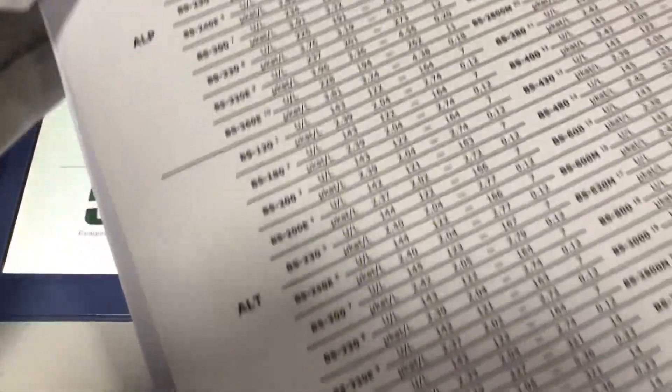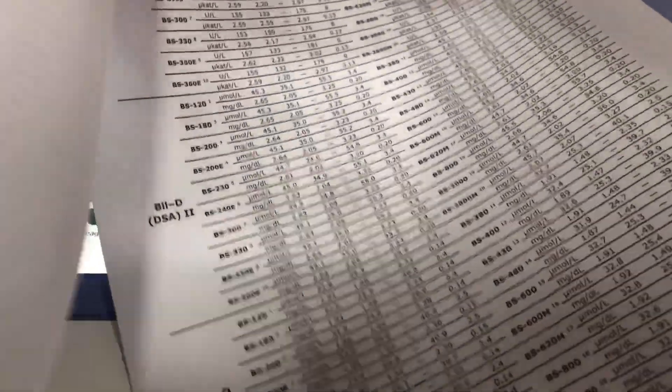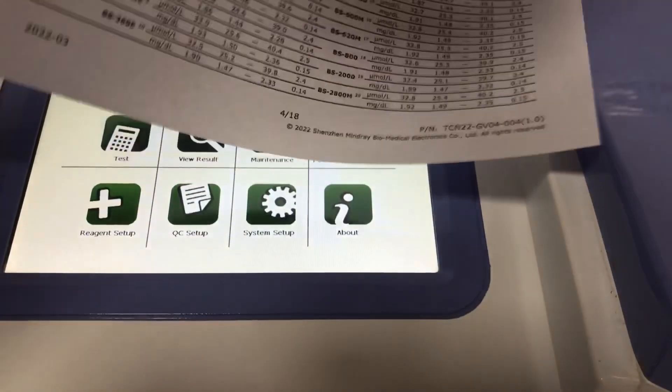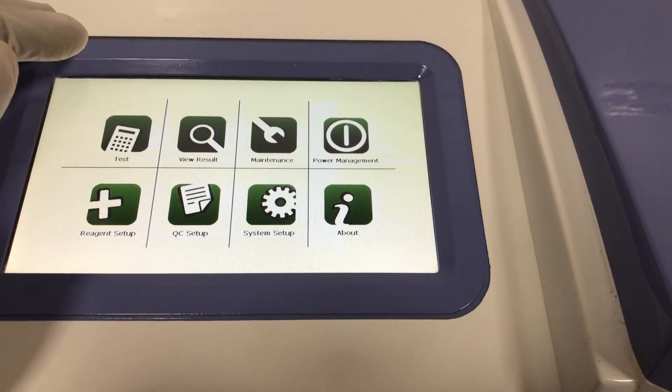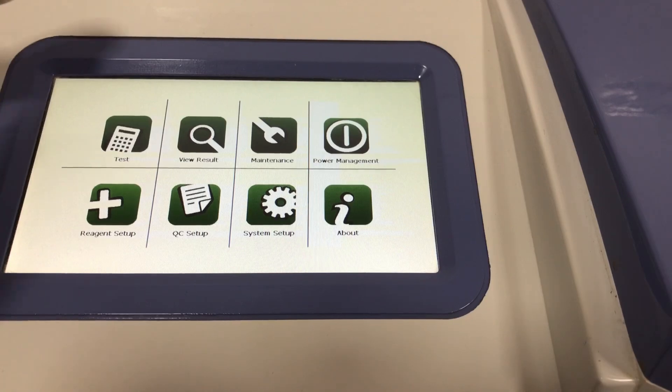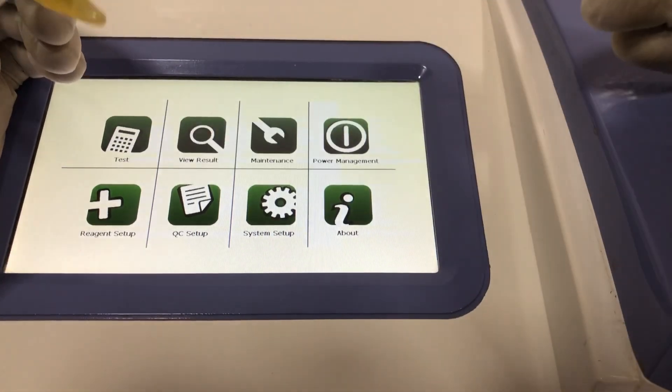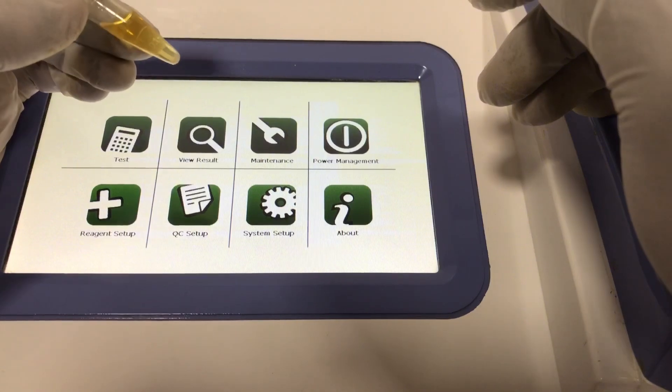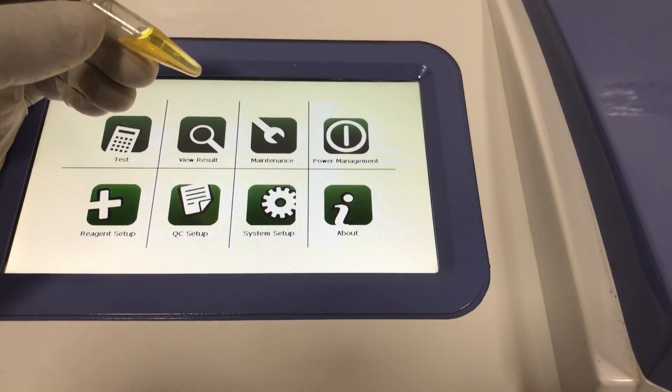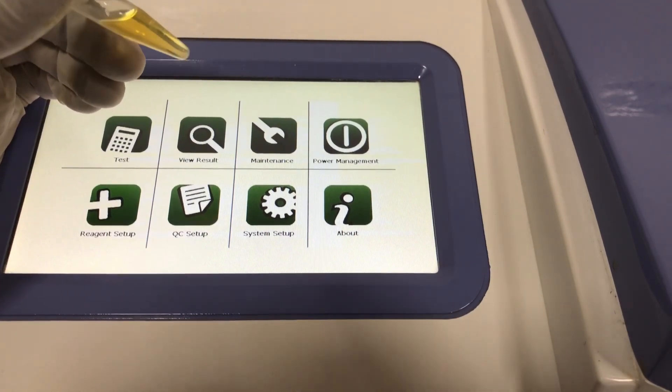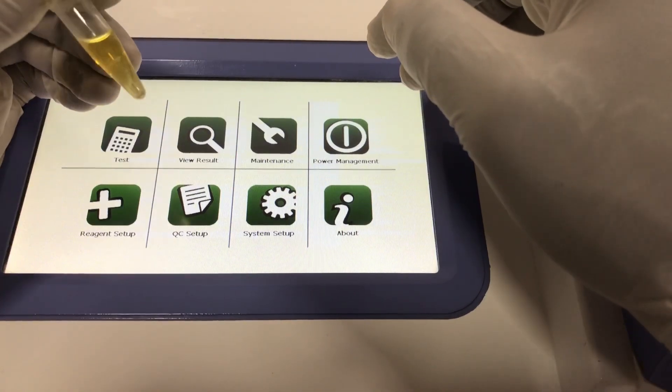We have all the analytes - ALP, ALT, it goes on. This is for AST and so on. Basically that is about quality control. This is the commercially prepared one. Sometimes you can also manufacture your own in the lab when you don't have access to the commercially made one. We'll be talking about that in part two of this video. Everything will be very practical, so stay tuned and watch out for part two.